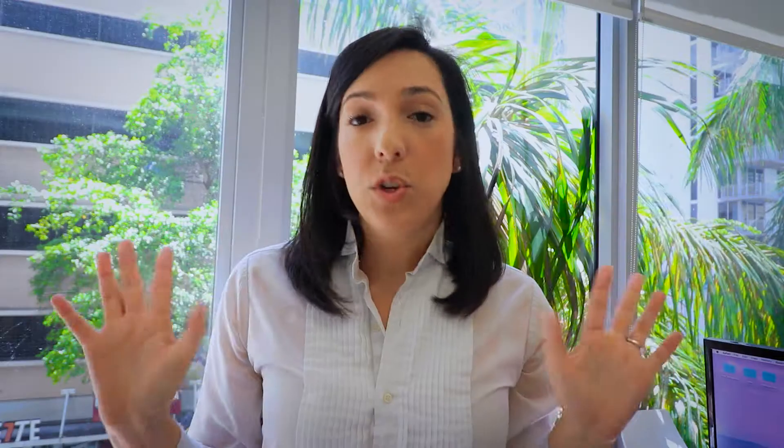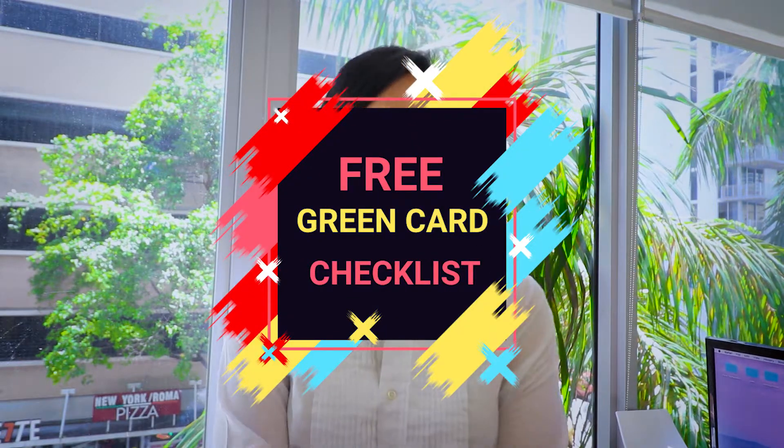Before we get into today's topic — the best way to change your B status into an E2 visa for investors — if you are an investor, a professional, or an entrepreneur, you need to download my free green card checklist specifically for entrepreneurs and professionals. It maps out all the things — little things, major things, big things — that can help you get your green card through your business, your profession, your entrepreneurship. I'm leaving it below, make sure you download that.